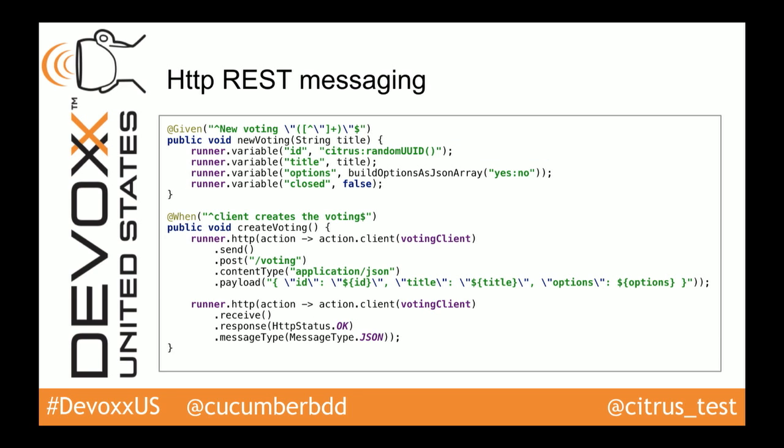Having a closer look at the runner API: we can use it to send out HTTP calls. We can define payloads here — XML, JSON, or plain text — and we can use variables in the payloads. At the very beginning I create some variables for the Citrus runner, and I can reference these variables in payloads with the dollar curly bracket expression syntax. This is a great way of creating state at the beginning of the test, and then in further steps I can reference, for example, the voting ID across the whole scenario.